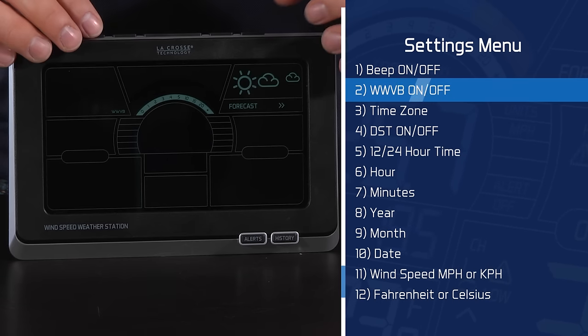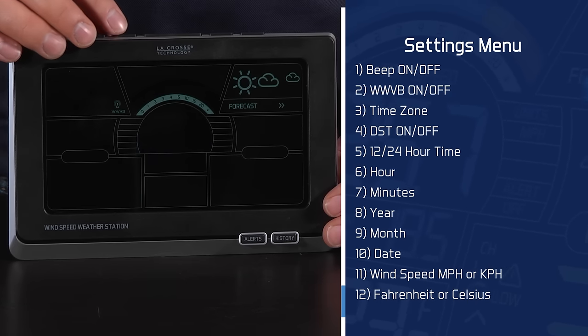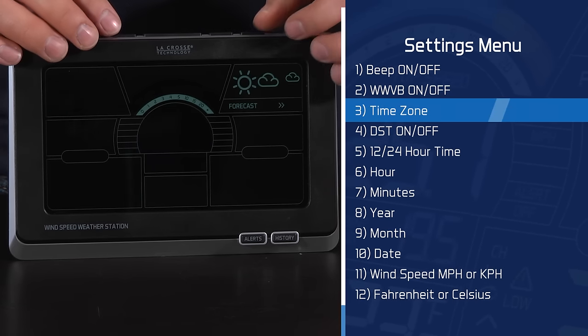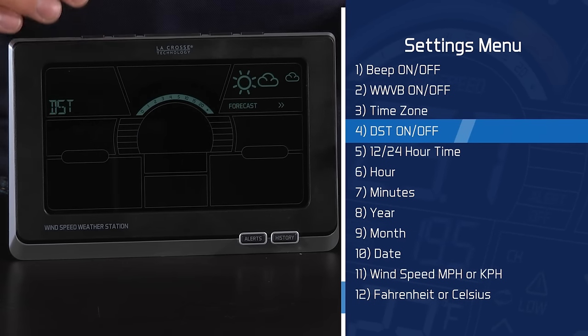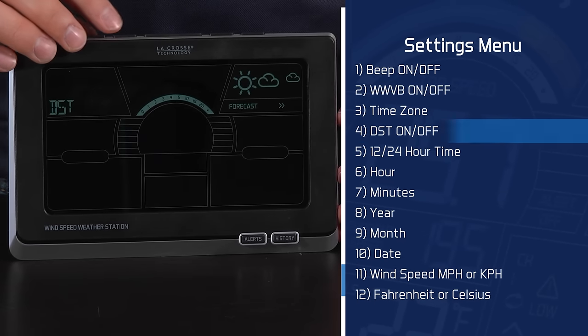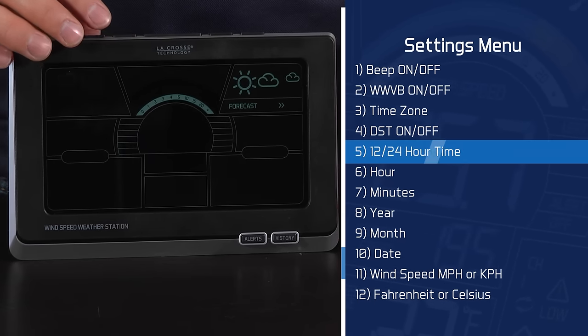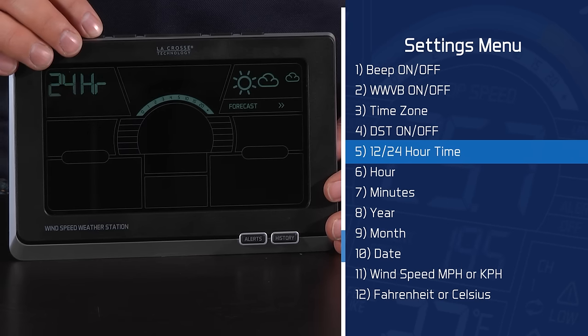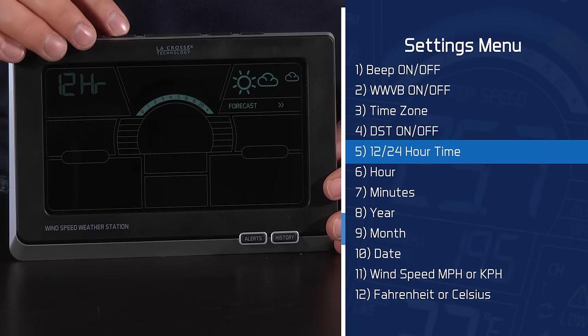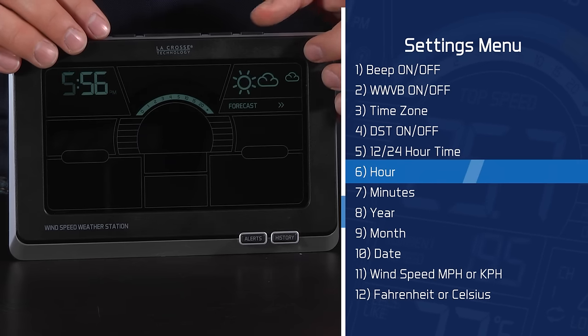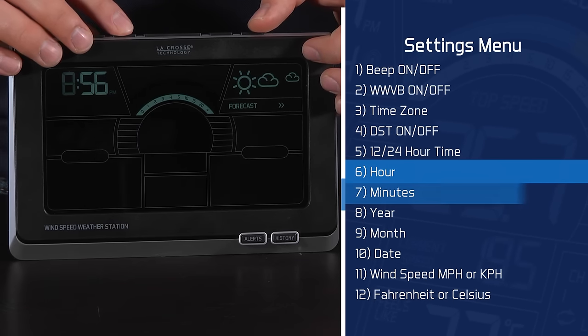But for example here, I will leave it on. The third item allows us to set our time zone. The fourth item is the daylight savings time on-off setting. The fifth item allows us to choose between a 12 and 24 hour clock. The sixth item is where we set our time, starting with the hour, followed by the minutes.